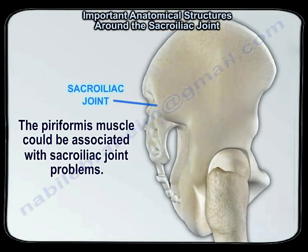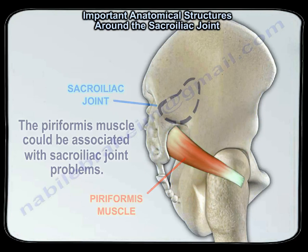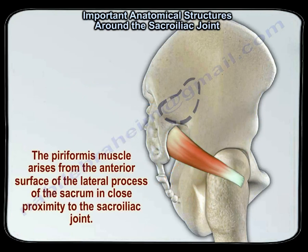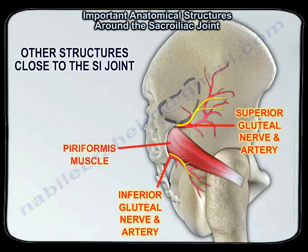The periformis muscle could be associated with sacroiliac joint problems. Here you can see the periformis muscle and the sacroiliac joint projection on the pelvis. The periformis muscle arises from the anterior surface of the lateral process of the sacrum in close proximity to the sacroiliac joint.